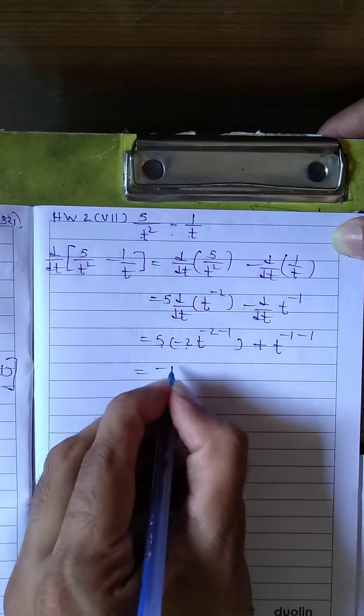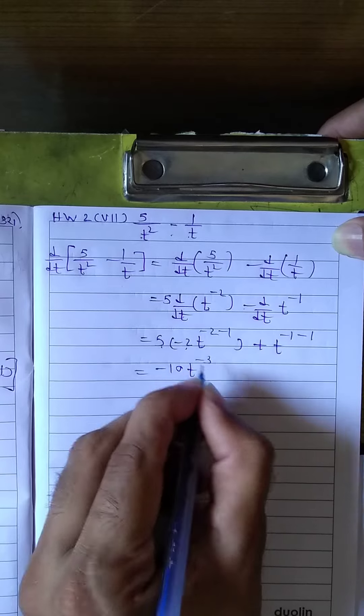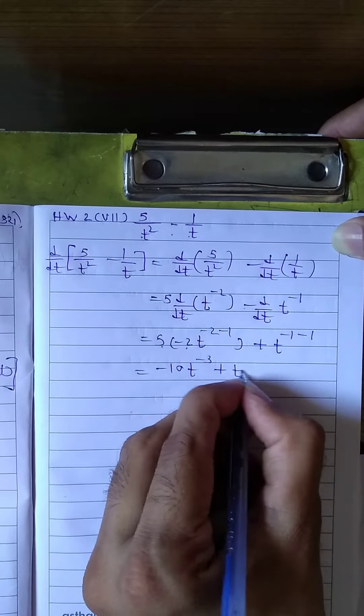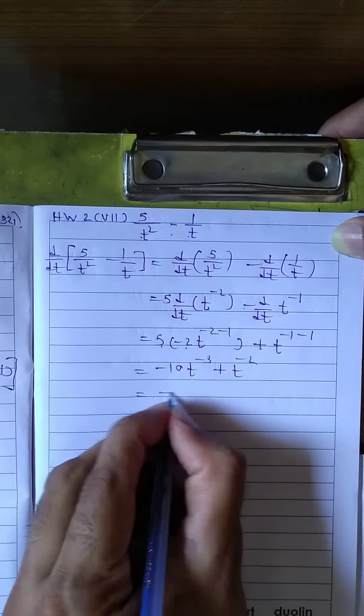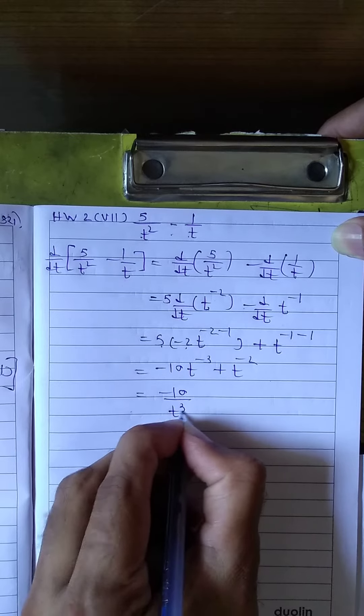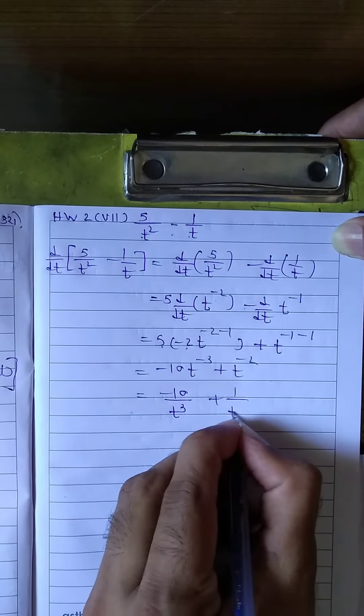2 into 5 is minus 10 t raise to minus 3, plus t raise to minus 2. This equals minus 10 upon t cube plus 1 upon t square.